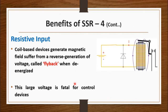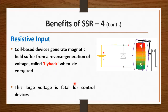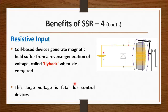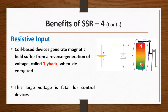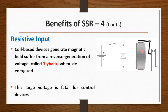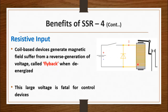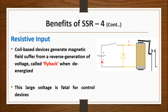Another key benefit of solid state relay is its resistive input. The input side is basically an LED, which is different from an electromagnetic relay that has an electromagnetic coil. To energize that coil you must energize the input side. There is a mechanism called flyback voltage — this voltage produced by the coil is very damaging and dangerous for the devices that control the energization and de-energization of that coil.